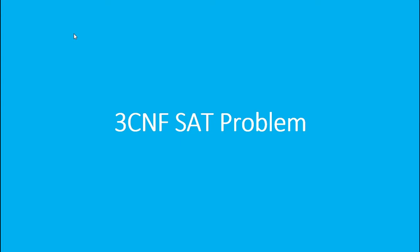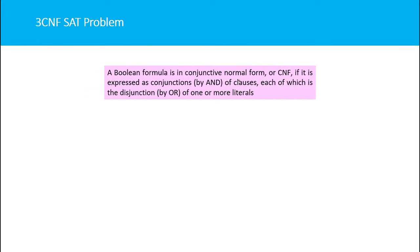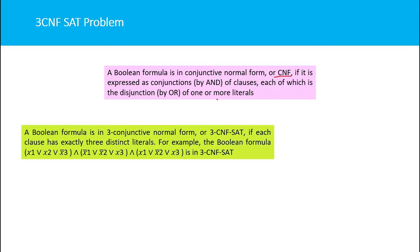The 3CNF SAT problem: a boolean formula is in Conjunctive Normal Form (CNF) if it is expressed as a conjunction (AND) of clauses, each of which is a disjunction (OR) of one or more literals. Suppose you have three boolean variables — this is a CNF boolean formula. Each variable in the formula is called a literal, and the OR group of literals is called a clause.